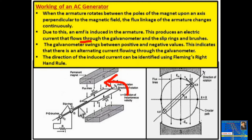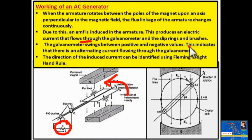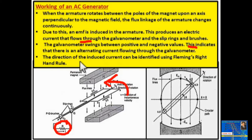Current will flow outward through brushes, slip rings, and through the resistive load. You can also connect a galvanometer or meter which will read the current. The galvanometer swings between positive and negative values, indicating alternating current. The direction of the induced current can be identified using Fleming's right-hand rule.